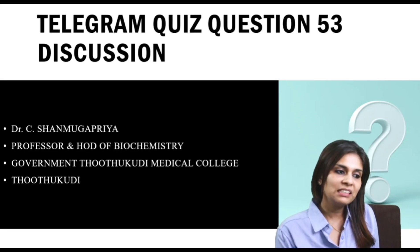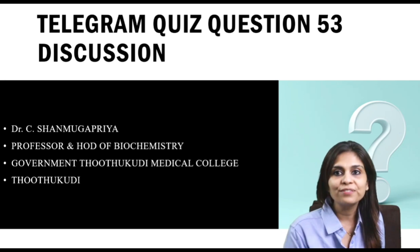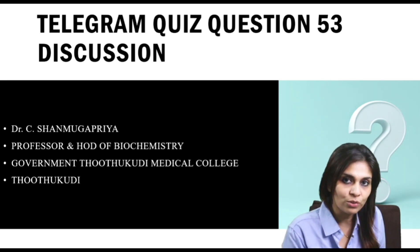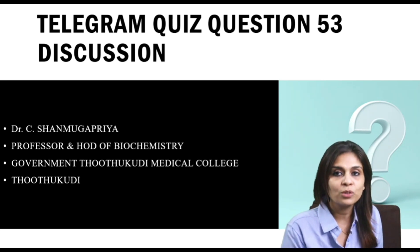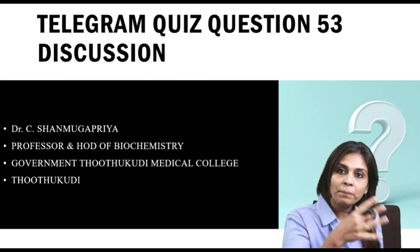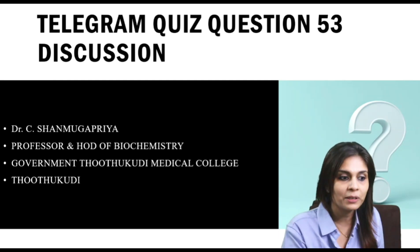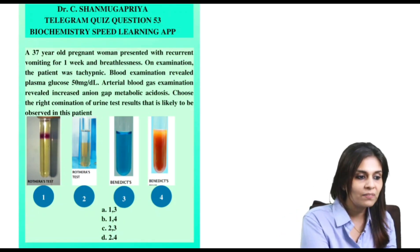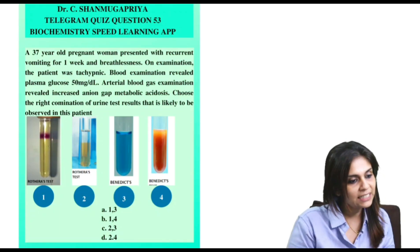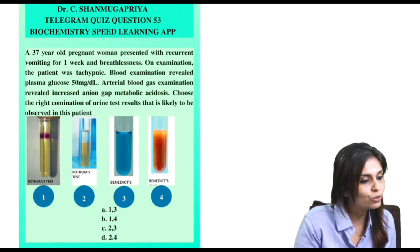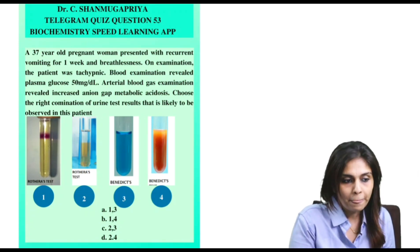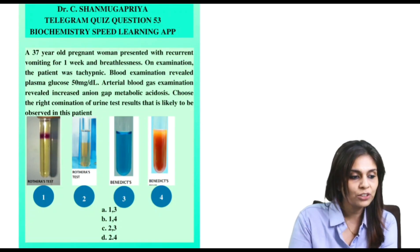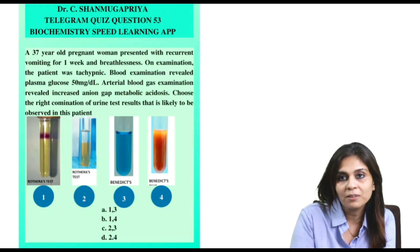Hi everyone, this is a video to discuss the Telegram quiz question 53. Usually I post posters for every question discussion, but today I thought I should make a video so that I'll be able to tell you all facts and concepts related to this question coherently and you will also be able to comprehend them. Let's quickly jump on to this question. The question says a 37-year-old pregnant woman presented with recurrent vomiting for one week and breathlessness. On examination, the patient was tachypneic. Blood examination revealed plasma glucose to be 50 mg/dL. Arterial blood gas examination revealed increased anion gap metabolic acidosis. Choose the right combination of urine test results likely to be observed in this patient.